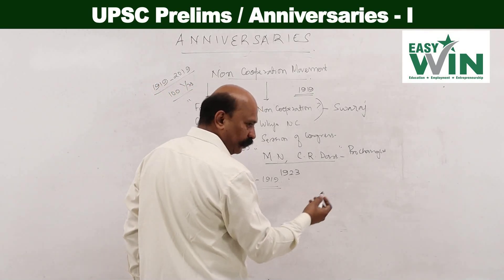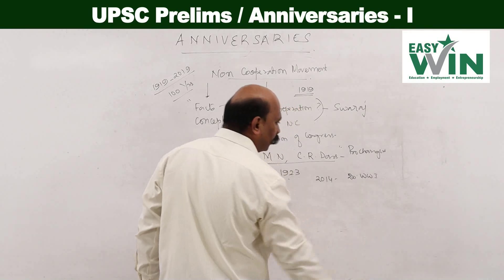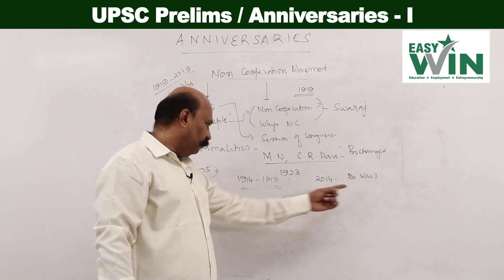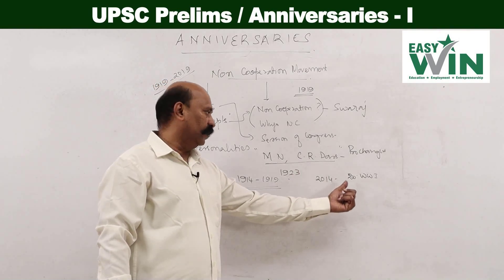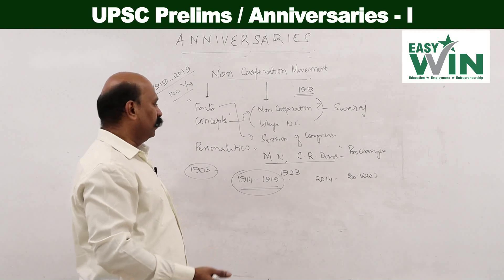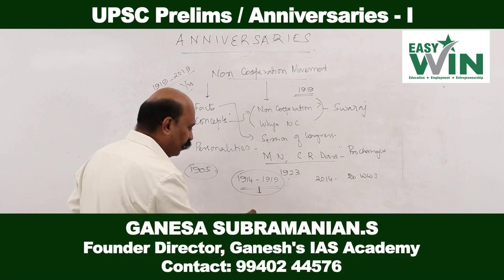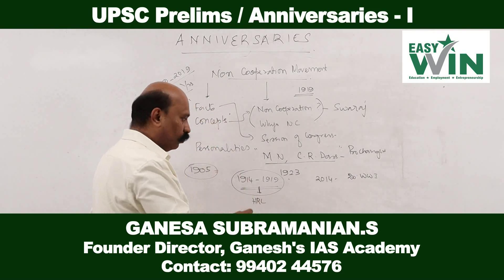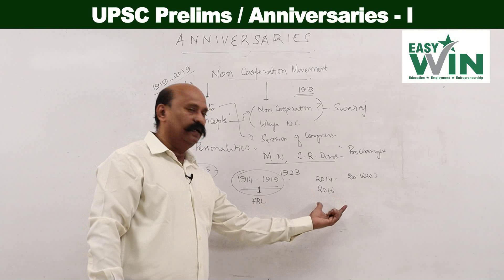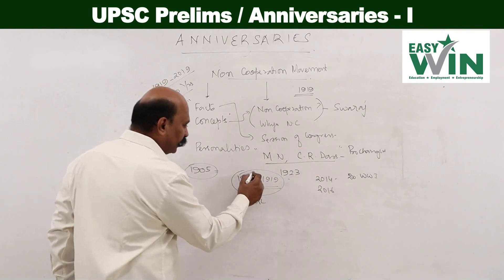Remember, last year — during 2018-19 or in the year 2014 — questions were mostly asked from World War 1, because 1914 was when World War 1 began. Similarly, there could be a question relating to the non-cooperation movement as well. Because of World War 1 and other events happening, the Swadeshi movement got suspended, followed by a period of doldrums, with several events happening between 1914 and 1919 — for example, the Home Rule League. In fact, questions relating to the Home Rule League were asked in 2016 because it was the 100th anniversary of the Home Rule League.